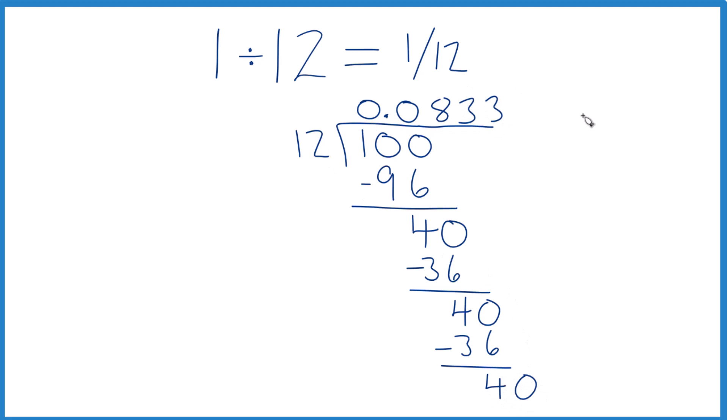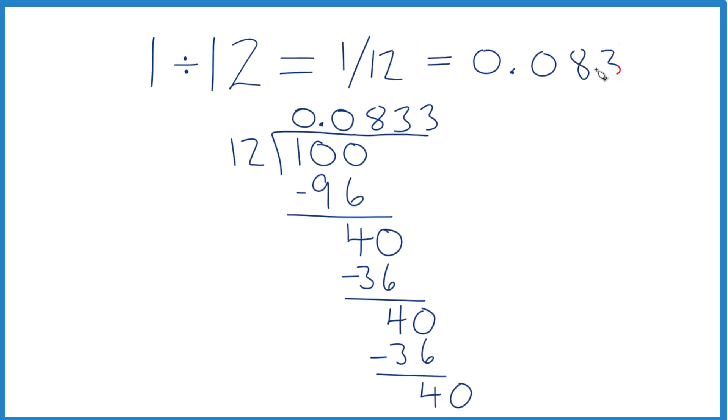This 3 keeps repeating. So we could say 1 divided by 12 that equals 0.083 with that 3 just keeping repeating. That's probably the best way to do it.